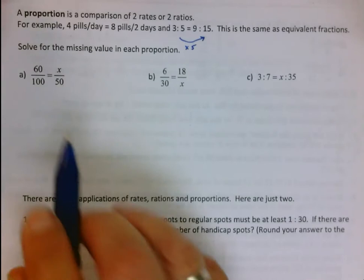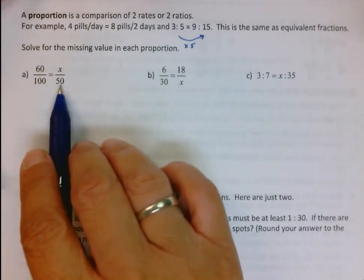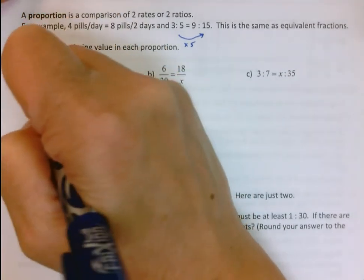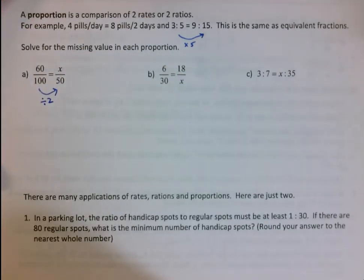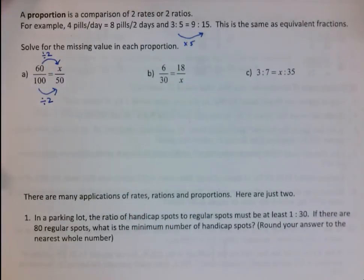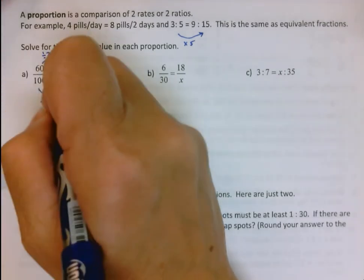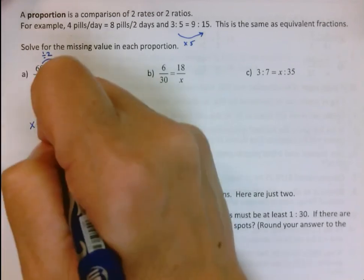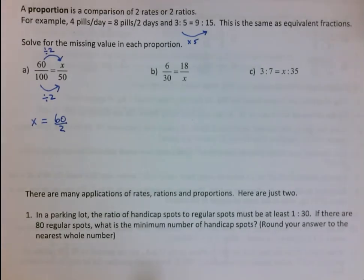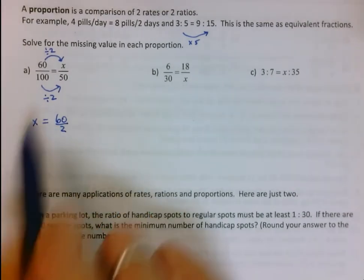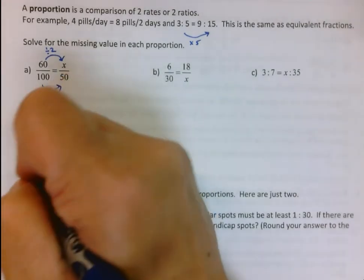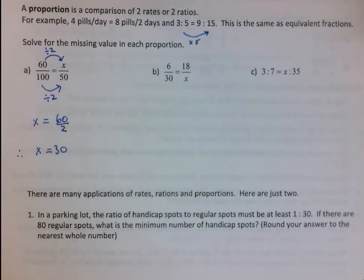We have to solve proportions. Solve for the missing value in each proportion. I have 60 over 100 equals x over 50. How do I get from 100 to 50? I can divide this by two. But to make the fractions equivalent, I got to divide these by two. Since 50 is 100 divided by two, then x is 60 divided by two. And in grade nine, we write division as a fraction. 60 divided by two is 30. Therefore x is equal to 30.